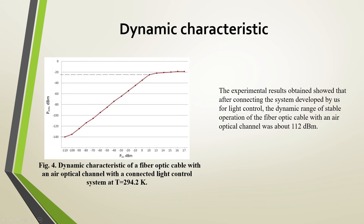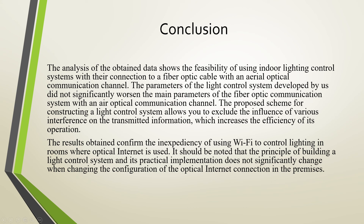The last parameter is dynamic range. In figure 4 you can see that after connecting the system for light control, the dynamic range of stable operation of the fiber optic cable with an air optical channel was about 112 dBm. This value for the linearity of the characteristic allows for reliable transmission of large amounts of information and corresponds to the values in classical main fiber optic lines. The analysis of the obtained data shows the possibility of using an indoor lighting control system with connection to a fiber optic cable with an aerial optical communication channel.